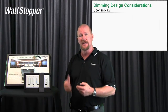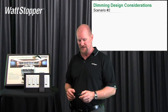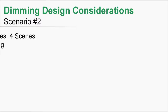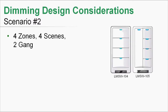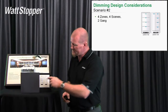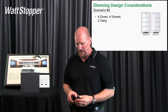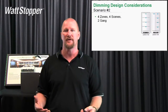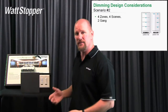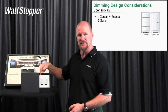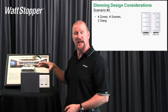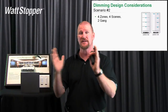We don't have to do it that way. I want to show you the next scenario, which I think is even more powerful. In this scenario, I'm not using the dimmers at all. All I've installed in this space is a four-button switch and a scene switch. Out of the box, I'm controlling four zones, four scenes, in two gangs — cutting the size down to two gangs.